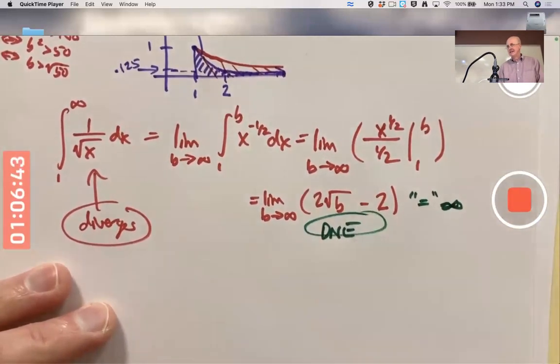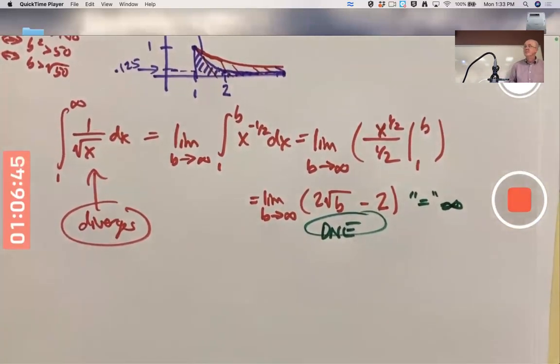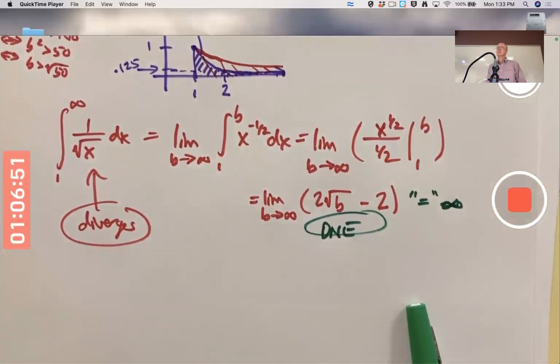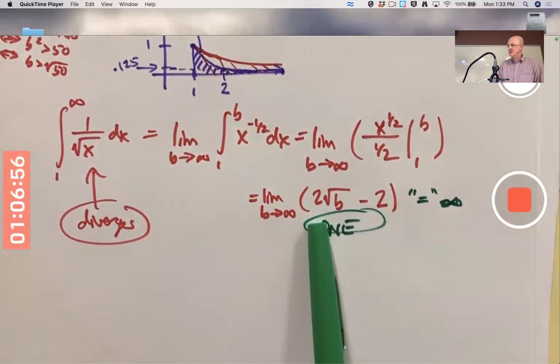But I prefer you say does not exist. When you write equals infinity, that does not mean infinity is a number. It's just describing the way this limit diverges. Does not exist.